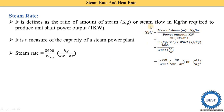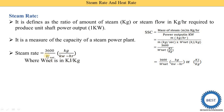The units of specific steam consumption are: kilojoule divided by kilogram, and kilogram divided by kilowatt-hours. Here, kilogram indicates the amount of steam and kilowatt-hour indicates the power output — how much power is produced in one hour. The unit of W_net is kilojoule per kilogram.